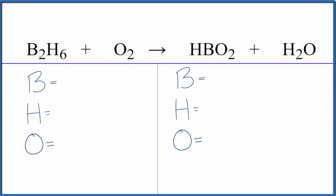So first we count the atoms up. Two boron atoms, six hydrogens, and two oxygen atoms.